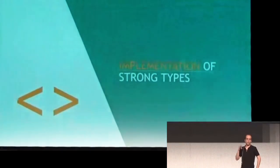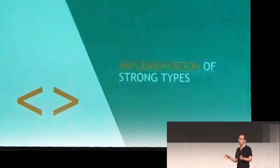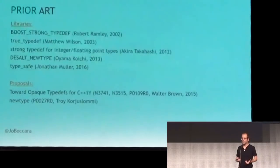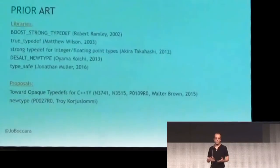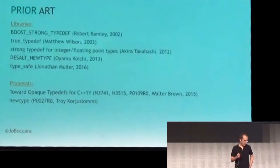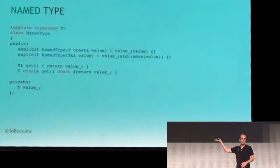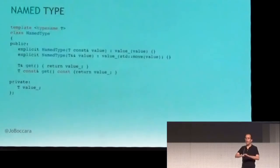The idea is to take what's in common between Radius and Diameter — and there's a lot in common — and do something generic out of that. I want to mention that this is completely not new. It's been a popular topic in the C++ community over the past years, and there have been libraries and even proposals to the standard to implement strong typing in various ways. Let's get to code. If we take Radius and Diameter and put them in common, the idea is to have something that encapsulates the data behind a name and gives access to that data. I'm calling this NamedType, because that's the point of it.